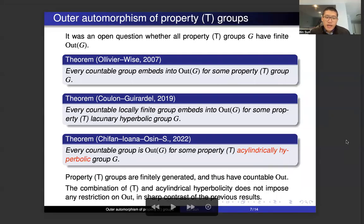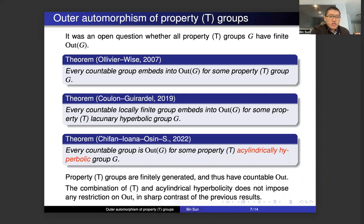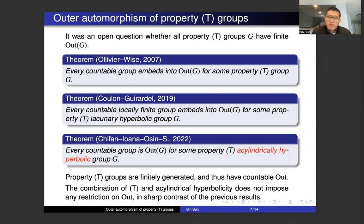Hi everyone, welcome back. We covered this in the first lecture. I mentioned the main result: every countable group is the outer automorphism group of some property T, acylindrically hyperbolic group. In this lecture, I would like to sketch the proof of this result, or at least a key step of the proof.